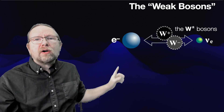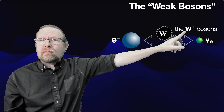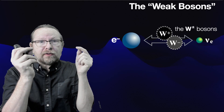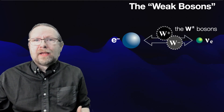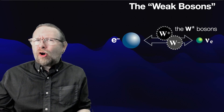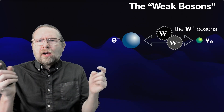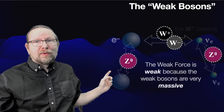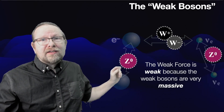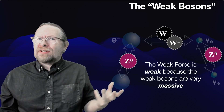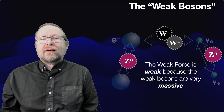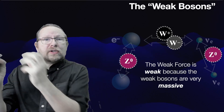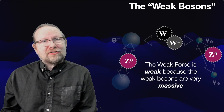There are more weak interactions than just the interaction between neutrinos and electrons. Neutrinos can interact with each other, and electrons can interact with one another. In fact, all the matter particles in the universe feel the weak force. When two particles of the same charge interact via the weak force, they exchange a different particle called the Z boson. The Z boson has a different mass than the W and has no charge. When two electrons interact via the weak interaction, they exchange a Z boson; when two neutrinos interact via the weak interaction, they also exchange a Z boson.